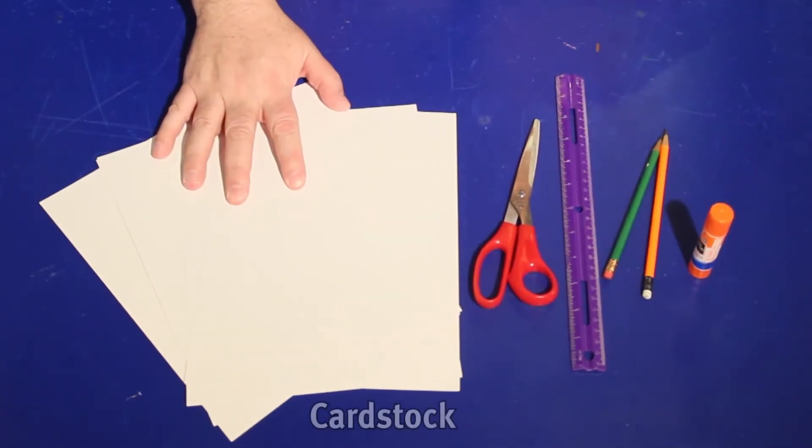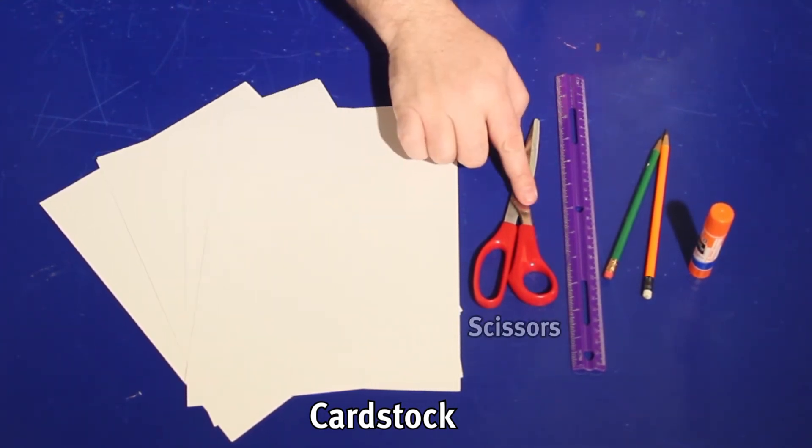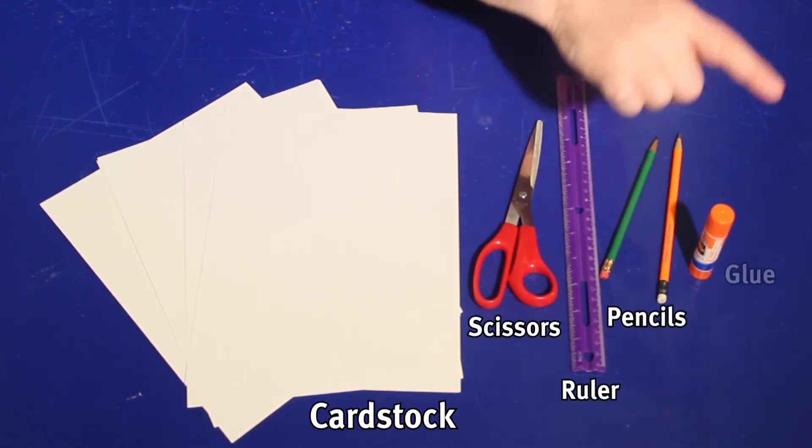To make pop-ups, or to paper engineer, you'll need cardstock. I know it's called paper engineering, but paper doesn't always work very well. You're going to want something stiffer like cardstock. Scissors, a ruler, a pencil or two, and glue.